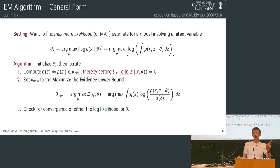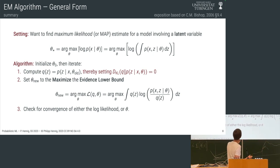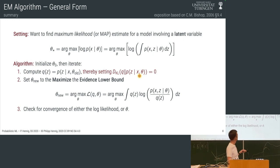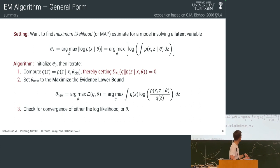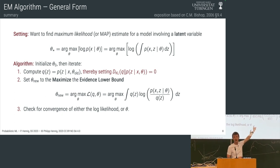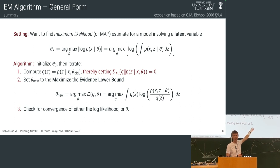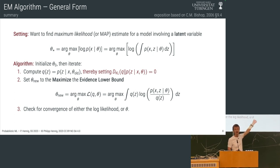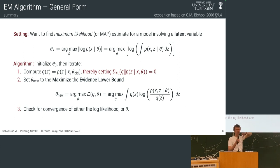One question you might have: why would you want to compute the posterior over z given theta? It sounds like it should be just as hard as the evidence. But it's actually not. For Gaussian process regression, for a particular choice of the parameters we can compute the posterior over the latent function — that's the entire point. It's just not so straightforward to think about what the landscape of parameters theta actually looks like.